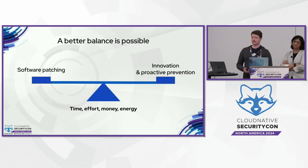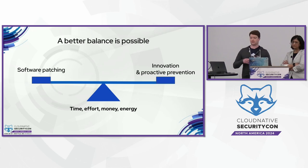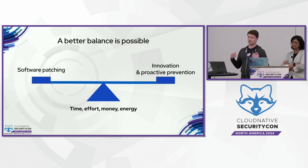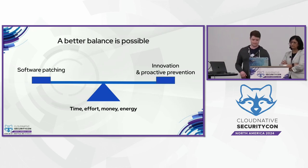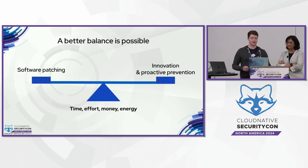At the end of the day, we have a choice: try to remediate every single known vulnerability, or try to strike some kind of balance. Trying to fix everything takes a lot of time, money, effort, and energy. We want to find a balance between patching software and having room for innovation, while also taking the proactive prevention steps we talked about. We'll be happy to answer any questions, or you can find us upstairs at the Red Hat booth. Thank you.